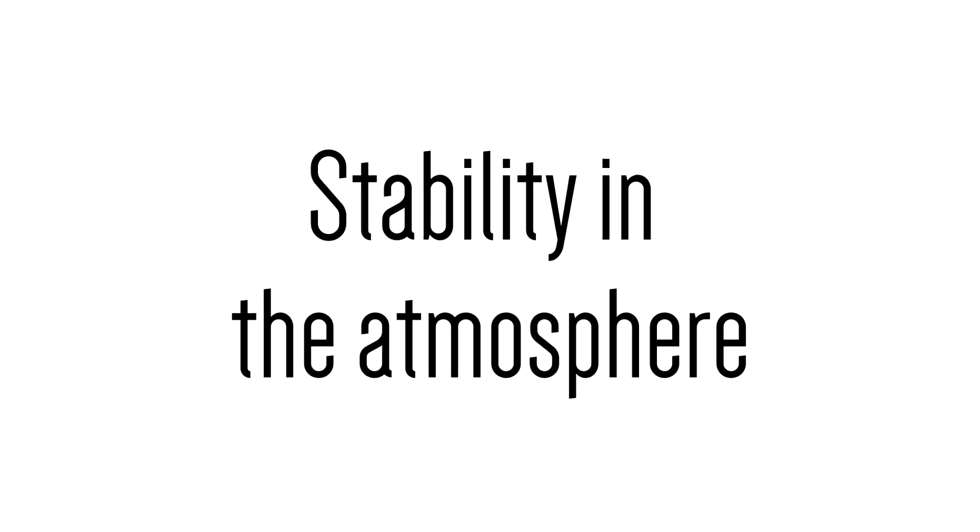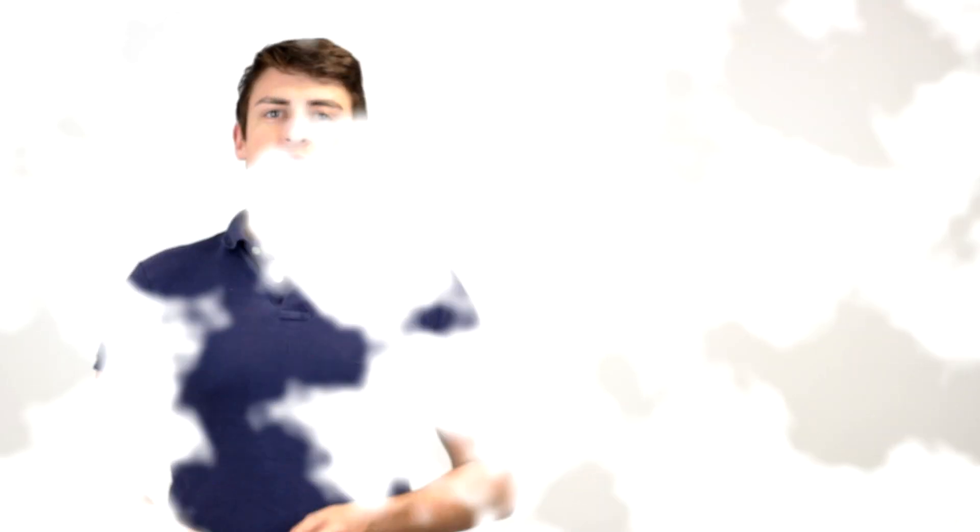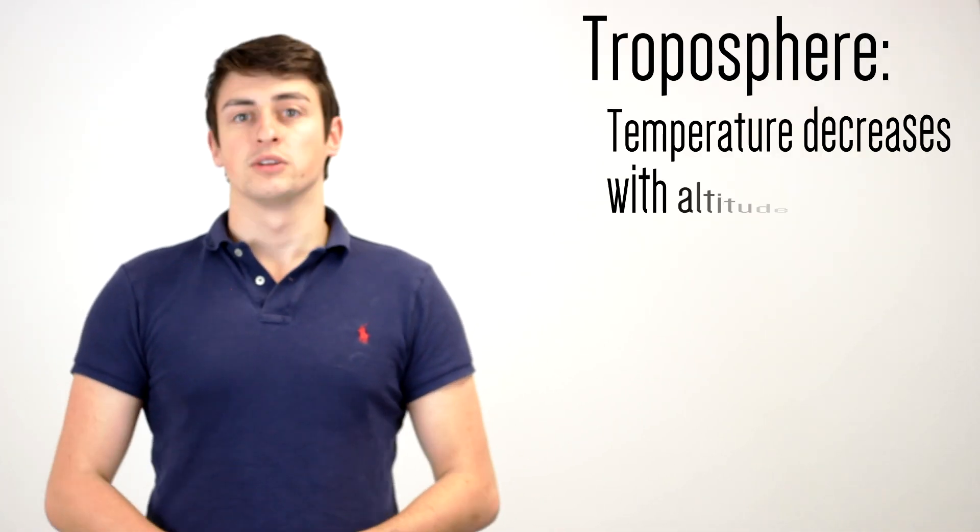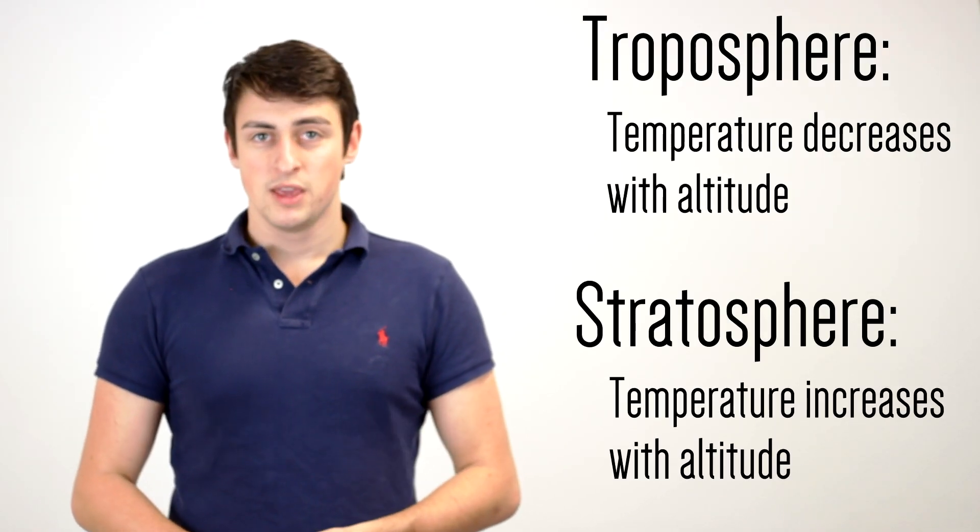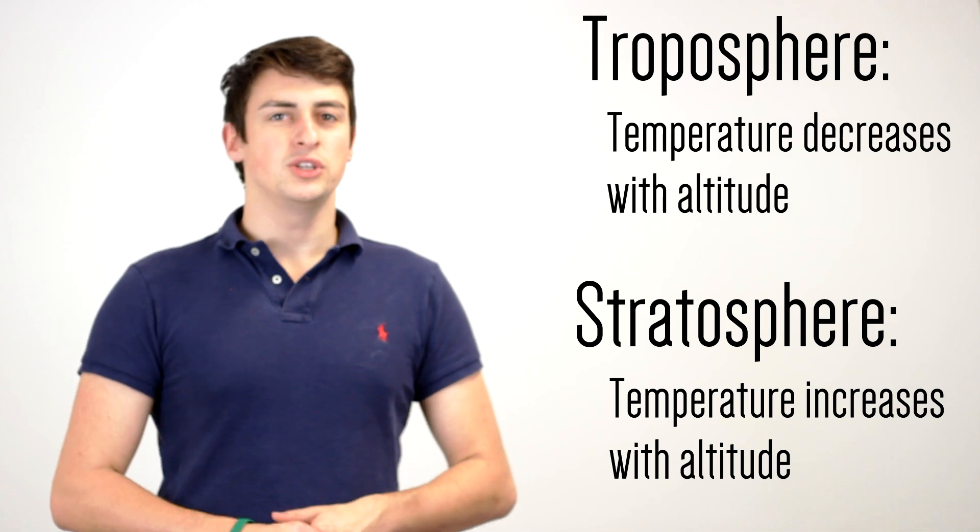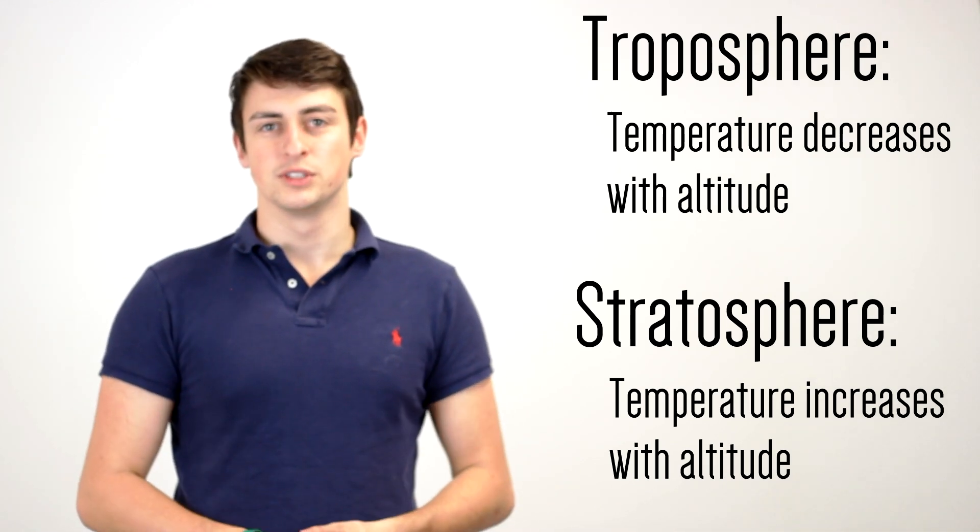You might recall from last time that the stratosphere differed from the troposphere because of its temperature profile, how the temperature changed with height. In the troposphere temperatures decreased with altitude, whereas in the stratosphere temperatures increased with altitude. And this property gives it some very unusual dynamics that we don't see here at the surface.